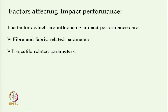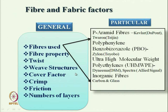The factors which affect impact performance are fibre and fabric related parameters, and projectile related parameters. The fibres used mainly are para-aramid fibres like Kevlar by Dupont, Twaron by Teijin, PBO fibres like Zylon by Toyobo, ultra-high molecular weight polyethylene like Dyneema, and inorganic fibres like carbon and glass fibres.